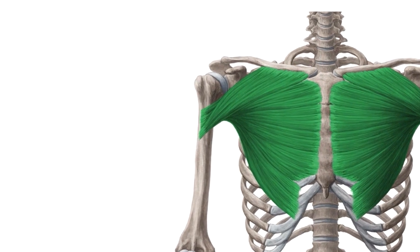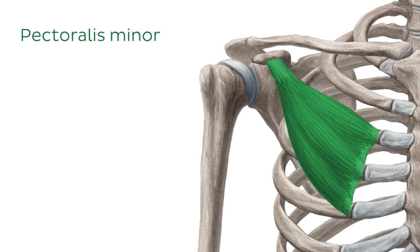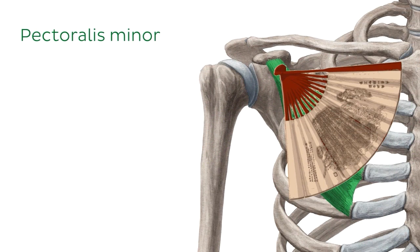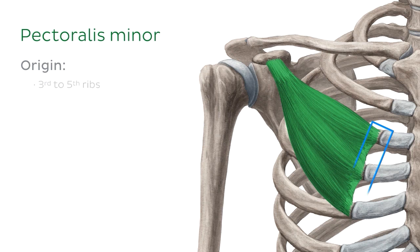The pectoralis minor muscle is also a fan-shaped muscle of the shoulder girdle, but it's a lot smaller than the pectoralis major. It lies posterior to the pectoralis major and has its origin on the third to fifth ribs.